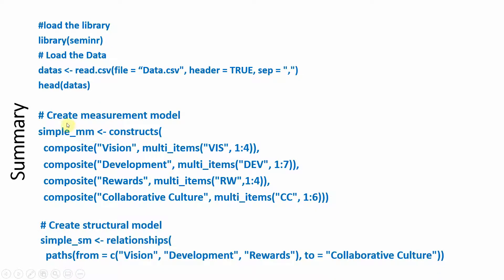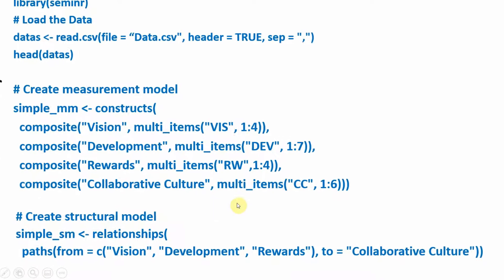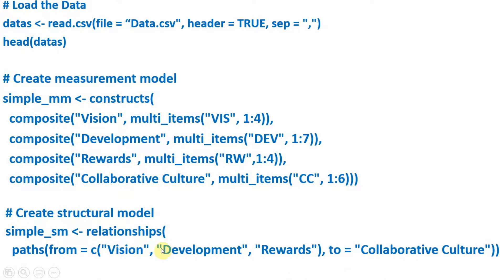Now that you have specified the measurement model, in PLS-SEM or any SEM-based software, you have to relate the constructs with each other. Vision, development, and rewards are influencing collaborative culture. To specify the structural model, you need a structural model object, and those relationships are specified as paths from your IV to your DV. Multiple independent variables are added in a vector. In future sessions, we will look into mediation and moderation as well.